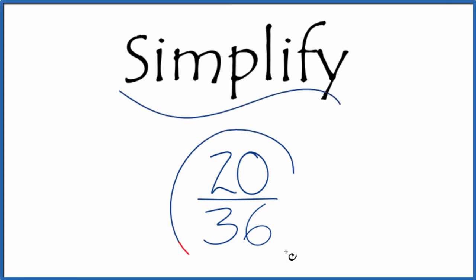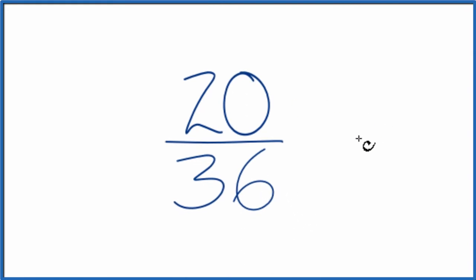Let's simplify the fraction 20/36. Here's how we do that. We want to find another fraction that's equivalent—it has the same value as 20 over 36—it's just that we've simplified it or reduced it to its lowest terms.